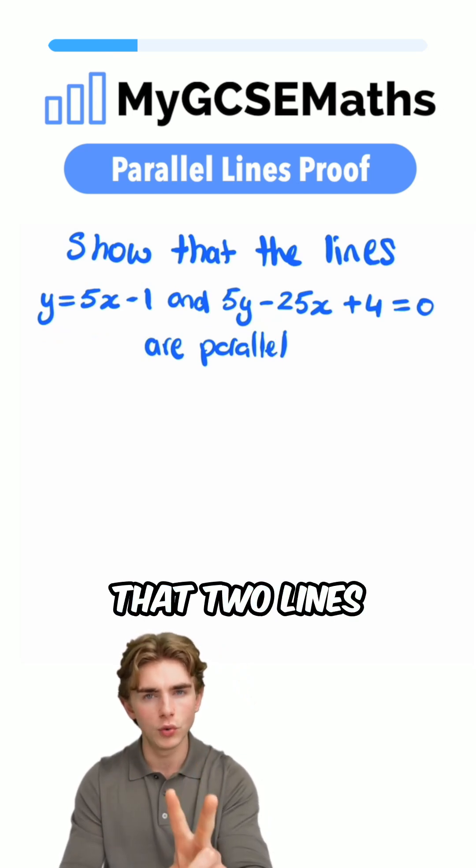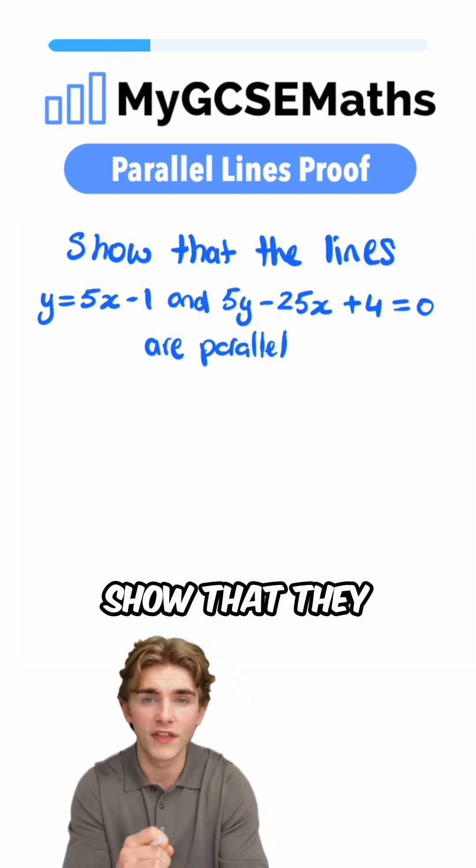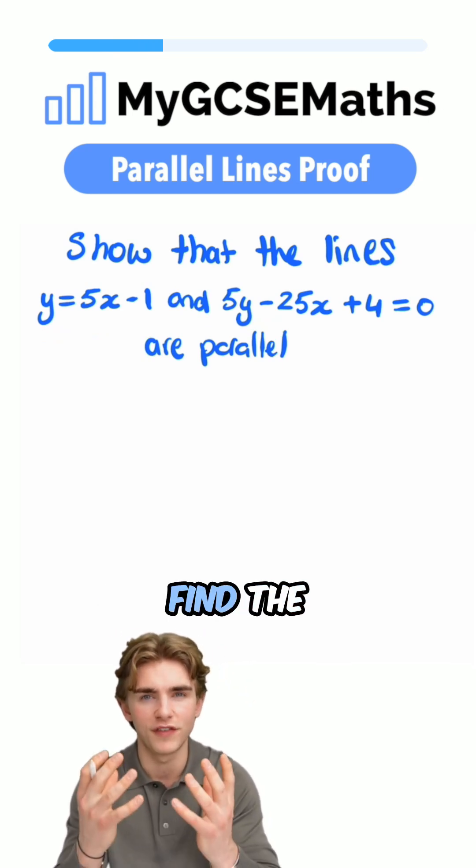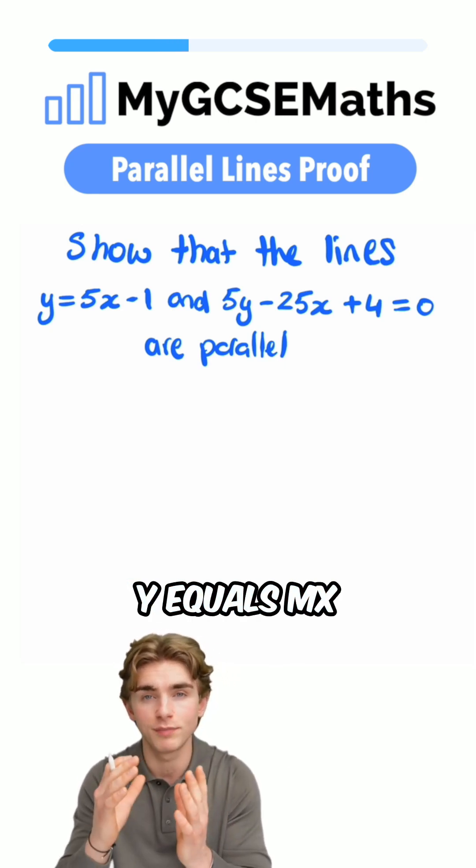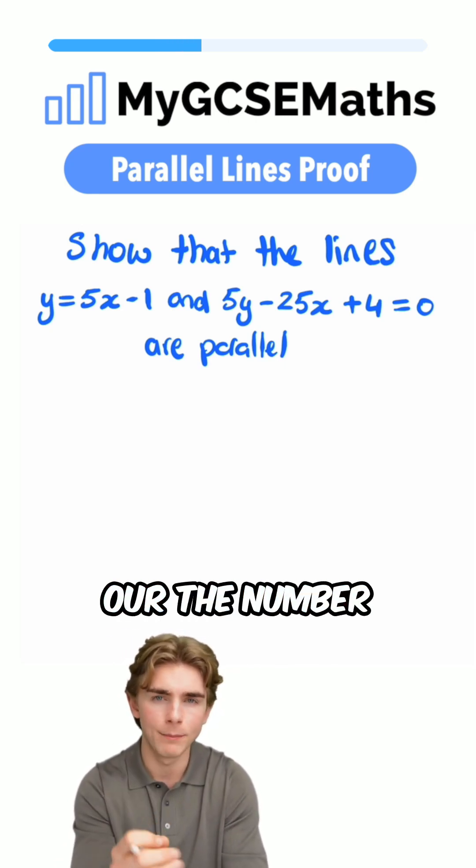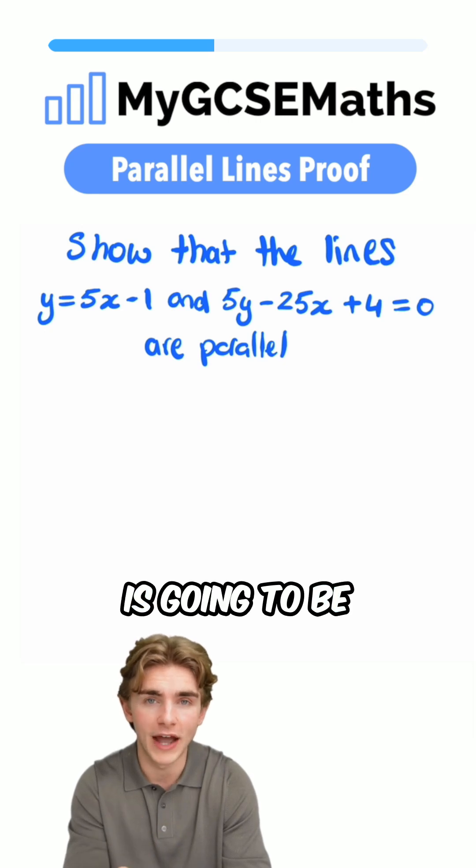To show that two lines are parallel, we need to show that they have the same gradient. In order to find the gradient, we need to rearrange the equations to be in the form y equals mx plus c. Then our m, the number next to our x, is going to be our gradient.